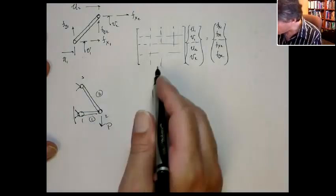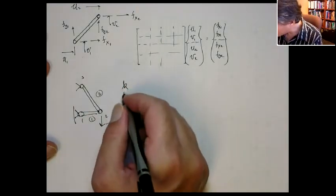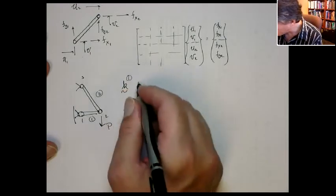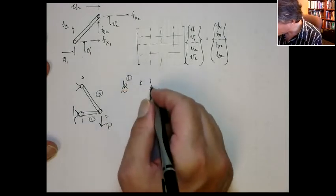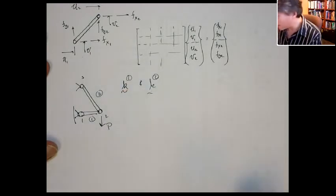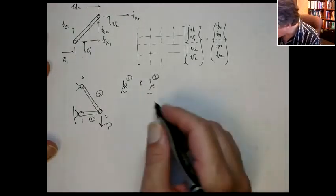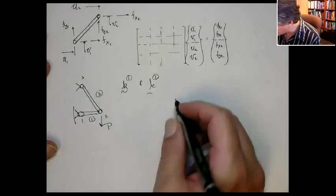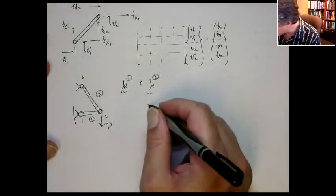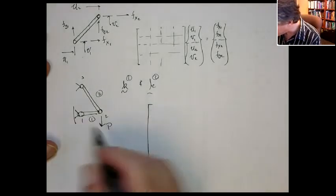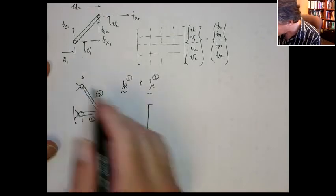Again, you could construct the local stiffness matrices for each one of those elements. We'll talk about how to do that later. And they would scatter the same way, but with degrees of freedom. So the global stiffness matrix in this case is actually going to have 1, 2, 3, 4, 5, 6 degrees of freedom.